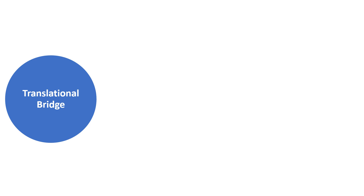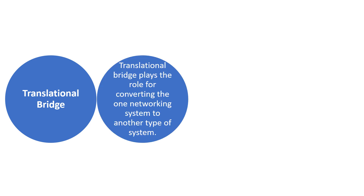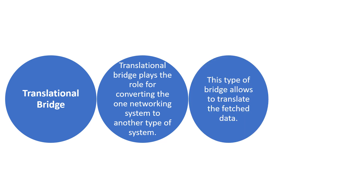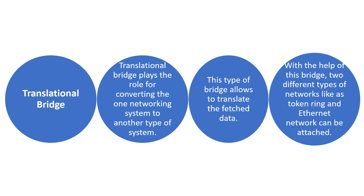The last one is the translational bridge, which plays a role in converting one networking system to another type of networking system. With the help of this bridge, two different types of networks — like token ring and Ethernet — can be attached. Data from one network can be converted so that it can be moved to the other network, and such translation can be done by this bridge.